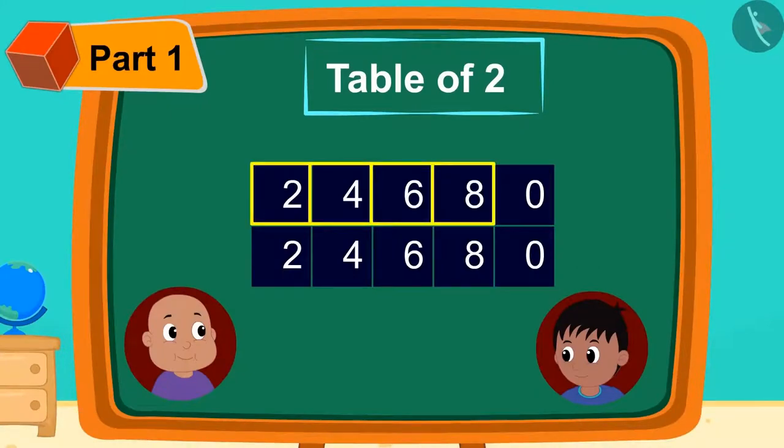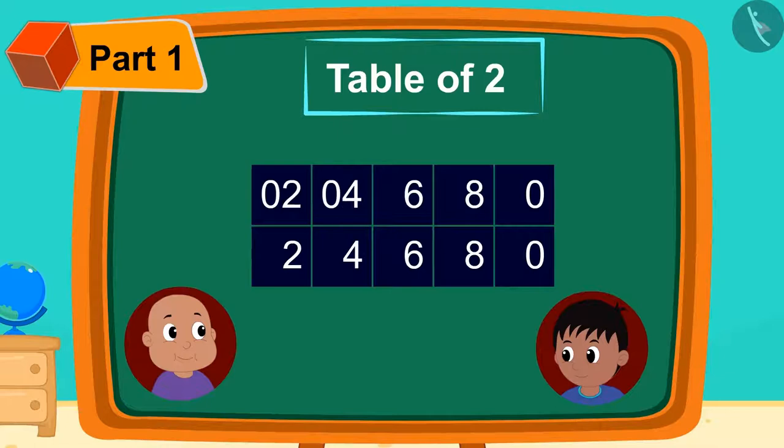Now he wrote 0 in front of 2, 4, 6 and 8 in 4 cells of the first line. And finally, he wrote a 1 next to the written 0.